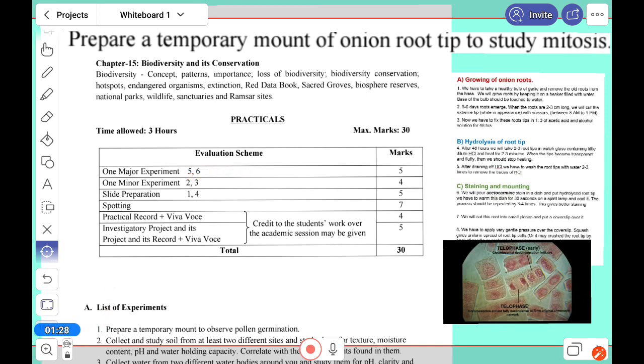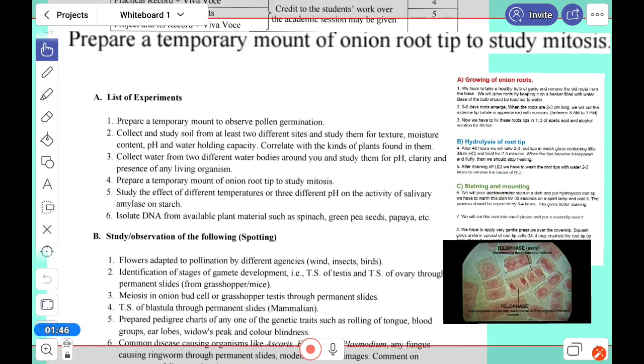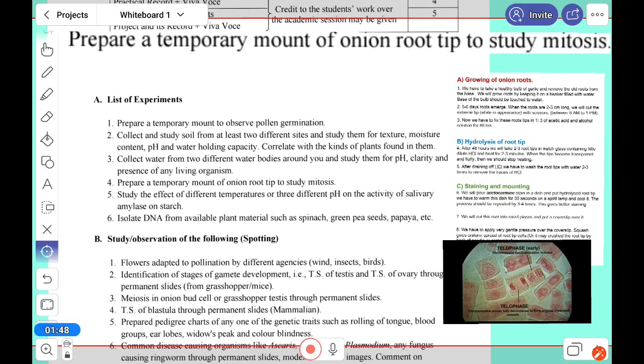You just go through carefully. Minor experiments two and three: out of two and three, we have to choose slide preparation one and four. One is the temporary mount for pollen germination, and four is temporary mount of onion root tip to study mitosis.